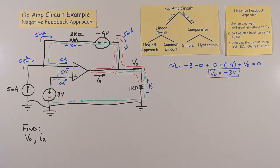Through the 1k ohm resistor, using Ohm's law, the current is V0 divided by 1000, which is negative 3 over 1000, or negative 3 milliamps.